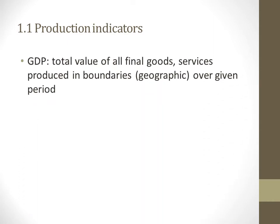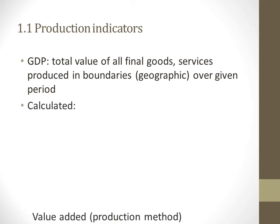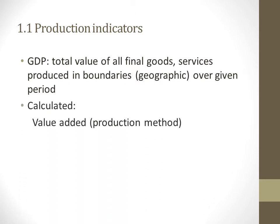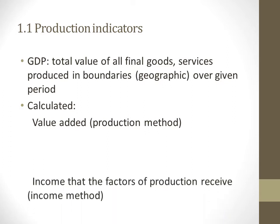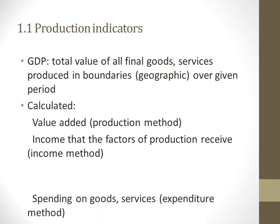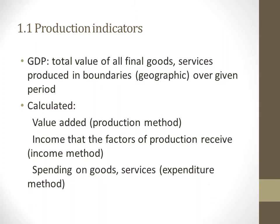Looking at production indicators: gross domestic product (GDP) is basically the total value of all goods and services produced within geographic boundaries over a given period of time. It's calculated using three methods: the value-added production method, the income method (factor income received by factors of production), and the expenditure method, which is spending on goods and services.